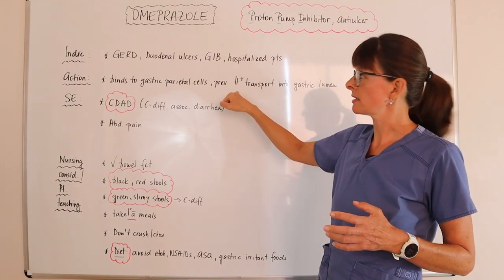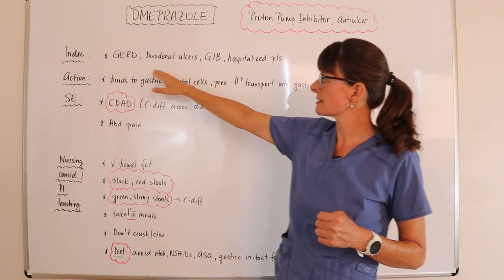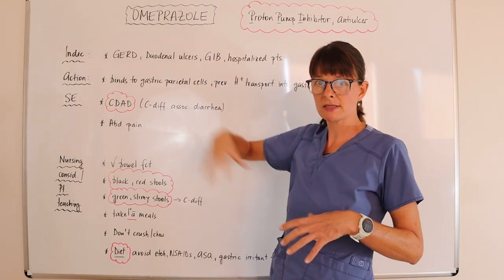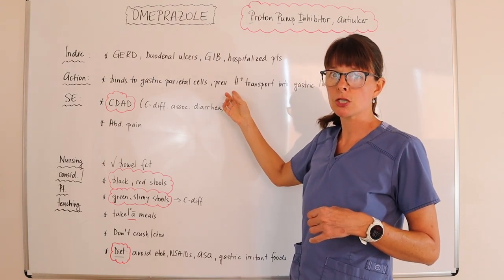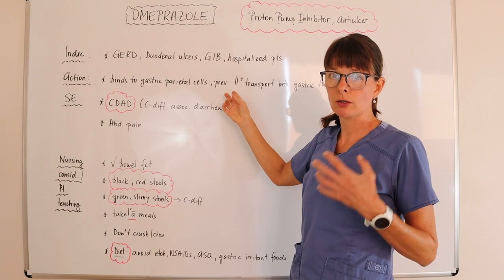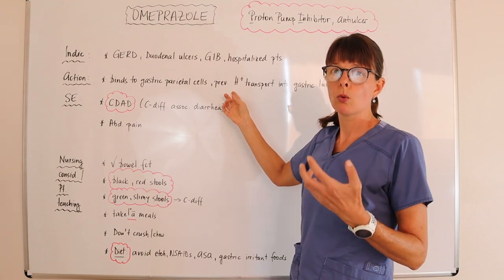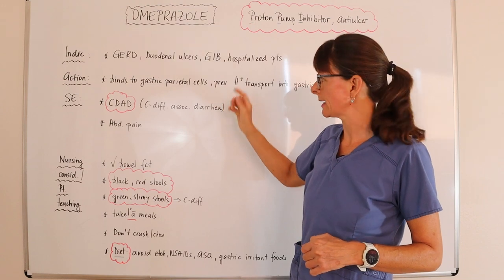So we want to prevent these ulcers or these irritated reflux cells in the esophagus to be protected from the additional acid that can cause more pain or more ulcer or breakdown of that stomach lining.